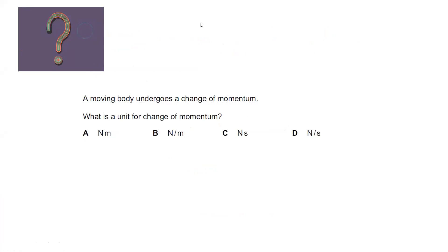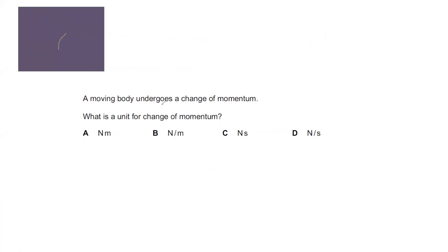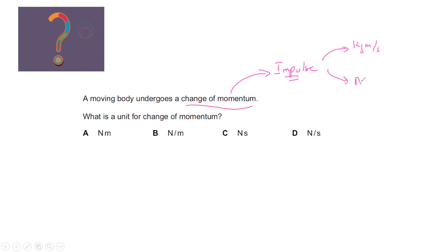For example, a moving object undergoes a change in momentum. The change in momentum is also known as impulse. Impulse has two units: one is kilogram meter per second and the other is Newton second.